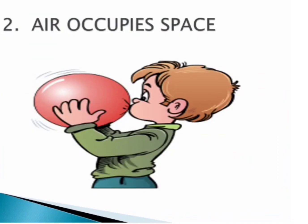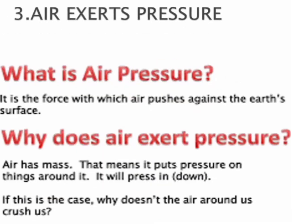The second property of air: air occupies space. We can explain this by doing a simple activity. You must have seen a deflated balloon — it is shapeless. When we blow air into it, it becomes round and firm. This activity shows that air occupies space.